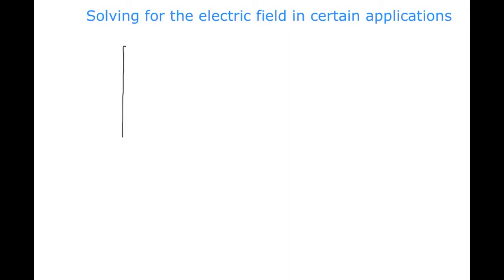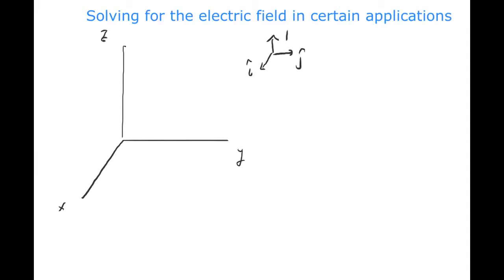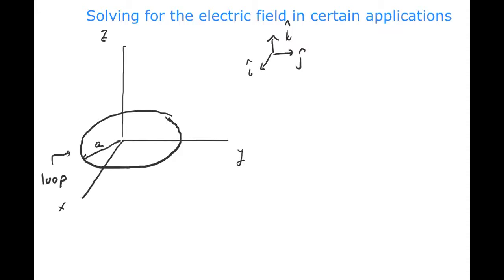We are going to do a problem which is a slight wrinkle of that last problem. In many ways, this is similar to the problem we looked at last time at the end of lecture five. I have a three-dimensional coordinate system with unit vectors i-hat, j-hat, k-hat. I'm going to draw a picture of my wire bent in the form of a circular loop. This wire has a radius a.